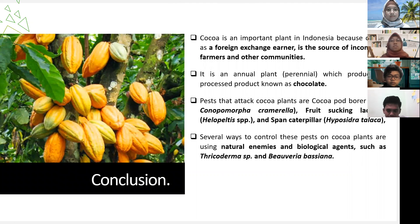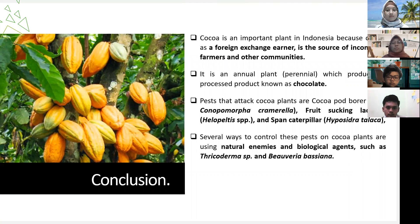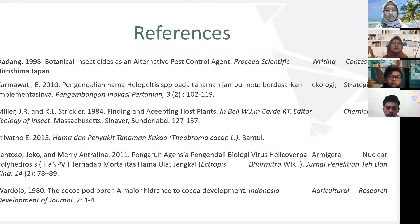In conclusion, cocoa is an important plant in Indonesia as a foreign exchange earner and a source of income for farmers and other communities. It is a perennial plant that produces processed products. The main pests that attack cocoa plants are the cocoa pod borer, Helopeltis sp., and the span caterpillar. Thank you for watching. Wassalamualaikum warahmatullahi wabarakatuh.